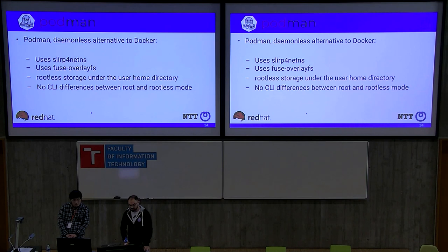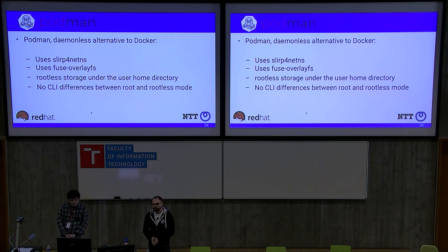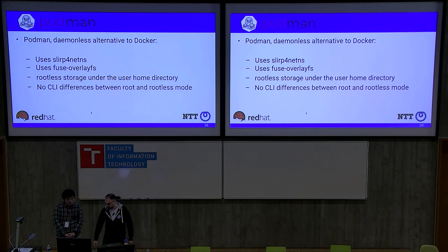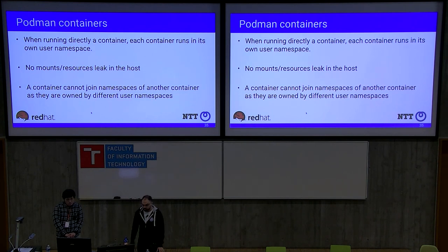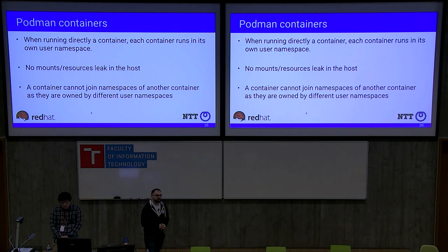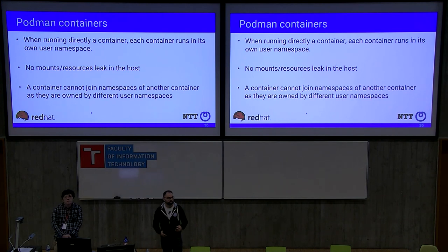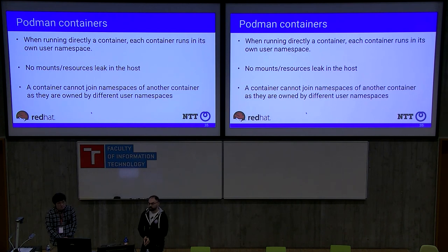You can use rootless podman in exactly the same way as rootful podman — there is no difference in the CLI. Each user has their own storage and configuration completely separate from the system. When we create a podman container we create a new user namespace every time, adding an extra security layer. Also, because rootless user namespaces can't create resources on the host, the kernel simply blocks us from leaking mount points on the host.